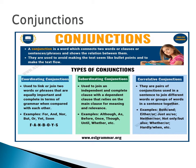On the other hand, subordinating conjunctions are used to join an independent and complete clause with a dependent clause that relies on the main clause for meaning and relevance. Examples: although, as, before, once, though, until, whether, and many more.